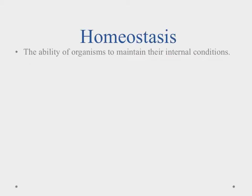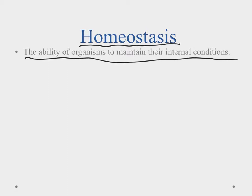Homeostasis by definition is the ability of an organism to maintain its internal conditions — more specifically, to maintain its body at the optimal conditions for life. We are warm-blooded and like our body to be about 98.6 degrees, because that's where enzymes allow all the reactions that keep us alive to happen.